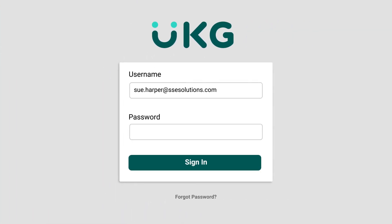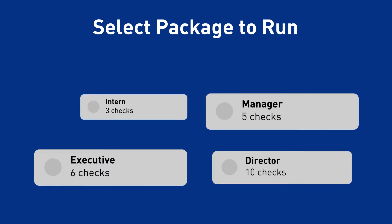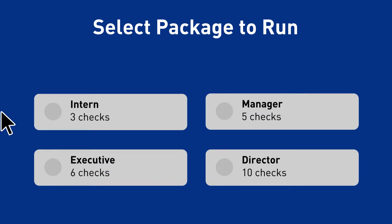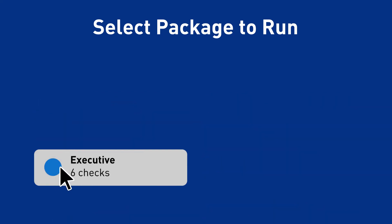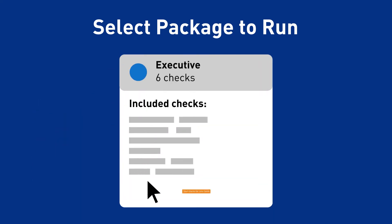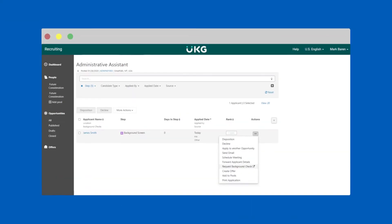Upon login, the power of our integration will be at your fingertips, helping you streamline the recruiting process and workflow. First Advantage's background screening integration to your UKG Pro recruiting application allows you to browse your company's customized background screening packages based on job role or responsibilities. With a simple click, it is easy to start a background check right from within UKG Pro recruiting.